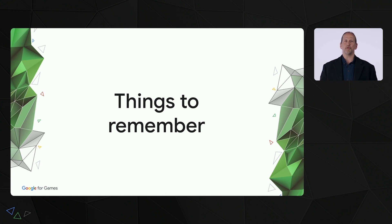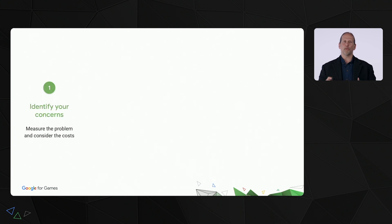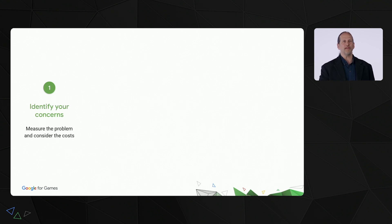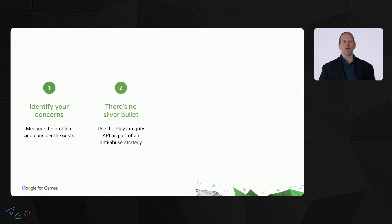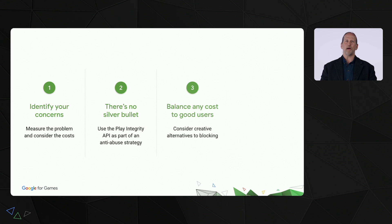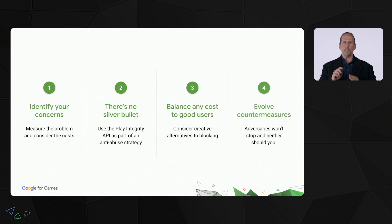Now, some important things to remember when using the API. Identify your main concerns — do you have a piracy problem, game misuse, fraudulent traffic, cheating, or something else? Measure how big the problem is and consider what it's costing you so that you know how much effort to put into reducing it. When it comes to integrity issues, there's no silver bullet, and the Play Integrity API is not intended to be one. You should use the Play Integrity API as part of an overall security and anti-abuse strategy. Make sure you're taking into account the risk of false positives and any costs you might be introducing to good users. Consider creative alternatives rather than just blocking risky traffic. Finally, you should keep measuring and evolving — listen to your users and stay up to date with Android and Play features, as well as industry anti-abuse best practices.